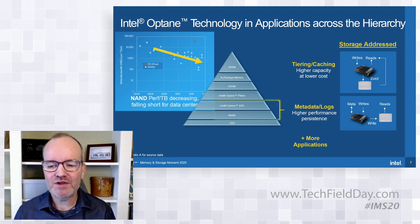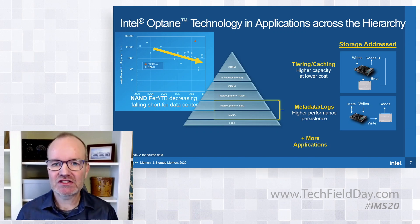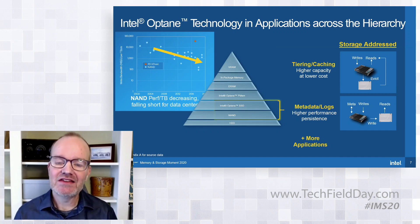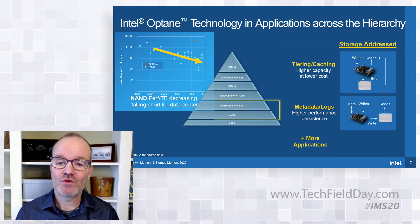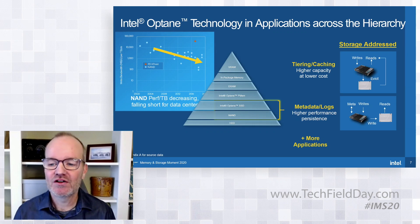Another more subtle use case is metadata and log. Think about a high-bandwidth network coming into storage — where do you put that data at very high performance and get it persistent quickly so you can acknowledge to the compute side? You land it in Optane. Then you trickle it out to the NAND storage, which is slower but bigger. The writes to NAND only happen when there's no read coming to NAND, improving quality of service for the entire layer. Metadata — the data about data telling you where things are stored — is another great use for Optane.